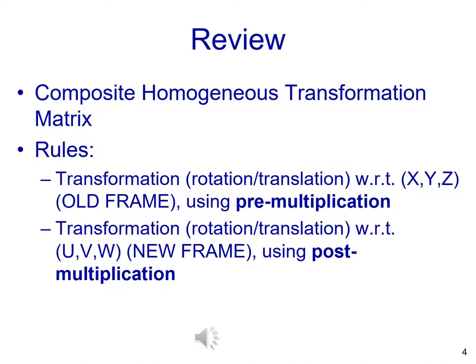From previous lectures, we know that in order to accomplish some arbitrary transformation, we use successive multiplications of matrices. This is known as the composite matrix. Since we are considering both rotation and translation, we call this the composite homogeneous transformation matrix.